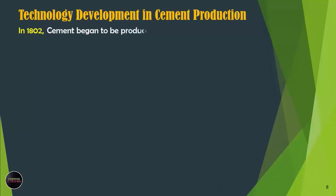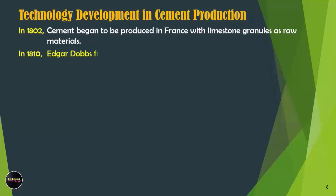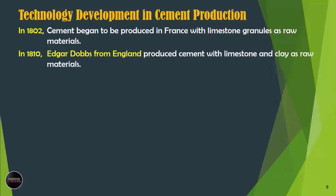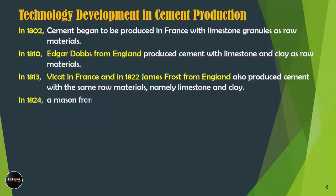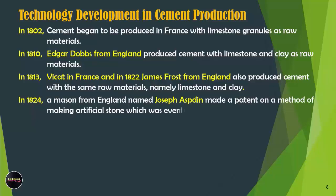In terms of technology development in cement production: in 1802, cement began to be produced in France with limestone granules as raw materials. In 1810, Edgar Dobbs from England produced cement with limestone and clay as raw materials. In 1813, Vickett in France, and in 1822 James Frost from England, also produced cement with the same raw materials, namely limestone and clay.